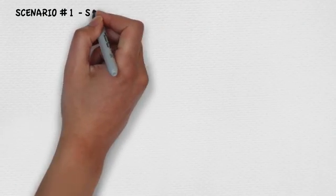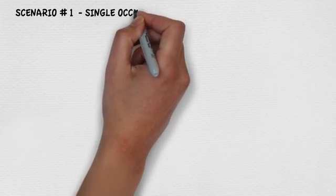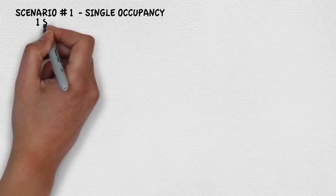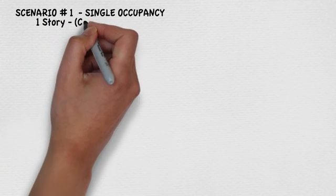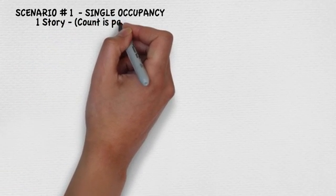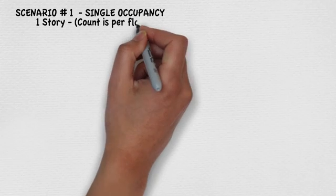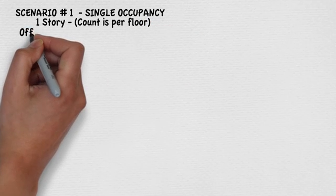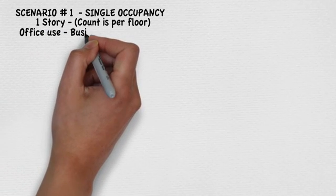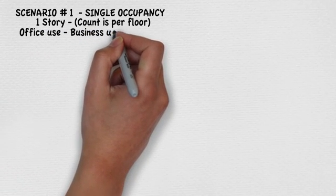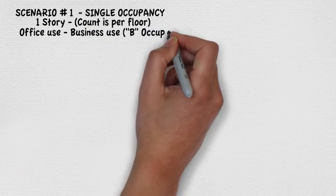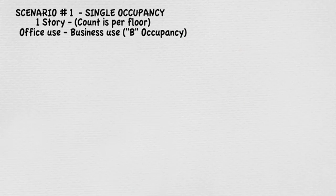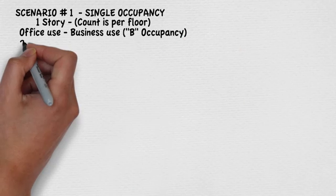First, let's talk about a single occupancy scenario. In this scenario, we will assume that we have a one-story building. As an FYI, you normally calculate plumbing count per floor, even in multi-story buildings. Let's also assume that the entire building is used for offices, which per the building code is classified as business use or B occupancy.